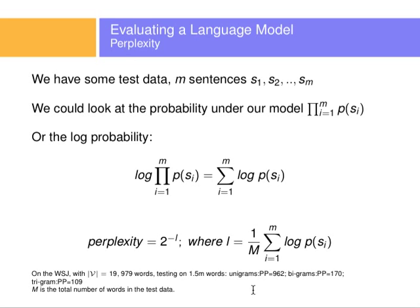To give you a few data, on the Wall Street Journal with a vocabulary size of almost 20,000 words, trained on the Wall Street Journal corpus, that's a big chunk of the Wall Street Journal, and then tested on 1.5 million words, on a corpus that had 1.5 million words.